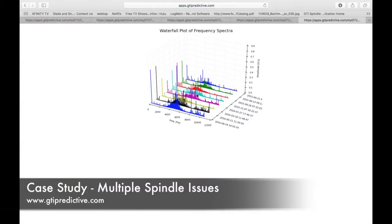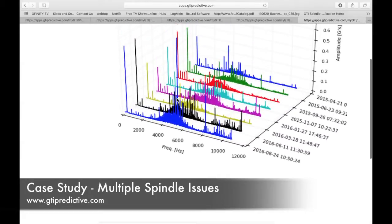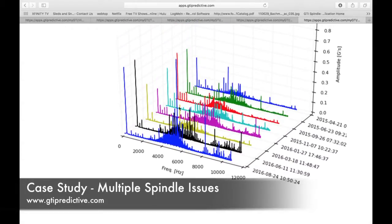Again, we see it's starting, getting a little worse, and then here at the last reading that was taken, we've got a high peak right in the center of that bearing mass that's starting to plague us along with this tall 1x running speed that is becoming a problem.